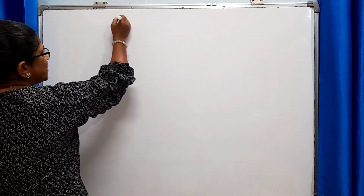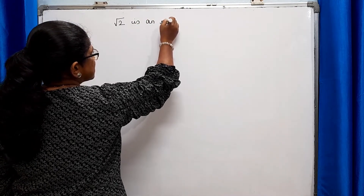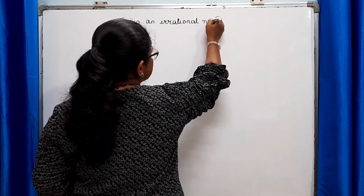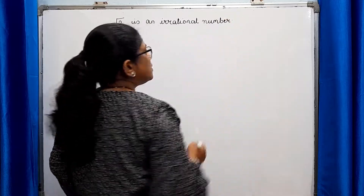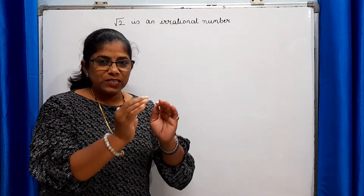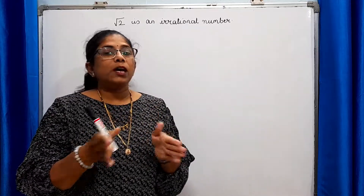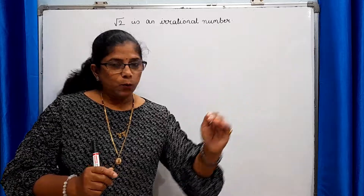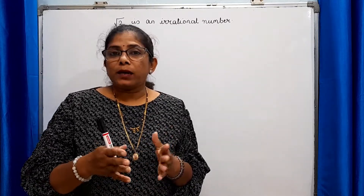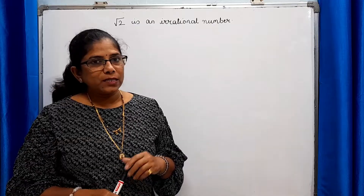What we have to prove? We have to prove that root 2 is an irrational number. Now, whenever it is asked to prove something, usually what we do is we start our proof from the given information, and with the help of some concepts we have learnt, we reach the proof. But sometimes we don't get the right way to start, so in such cases we use the contradiction method, or we can say the assumption method.